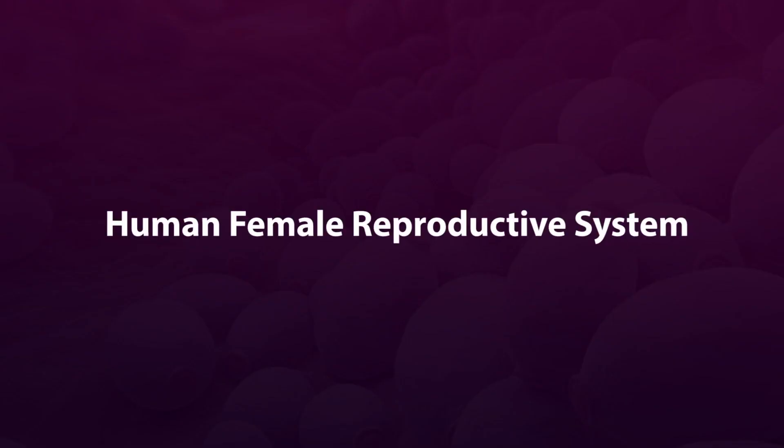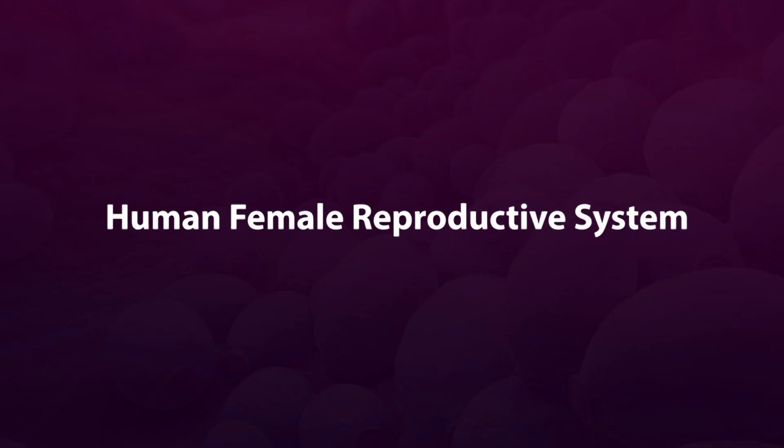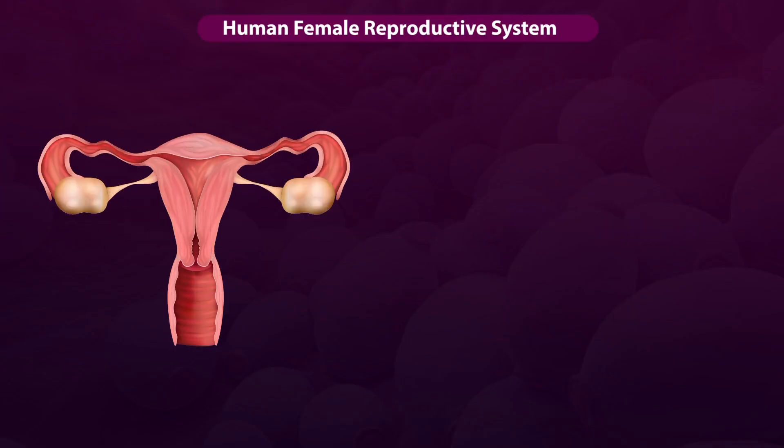Human female reproductive system. The female reproductive system performs four important functions.